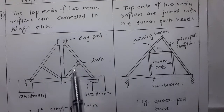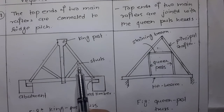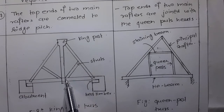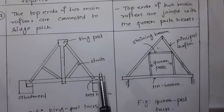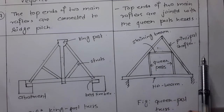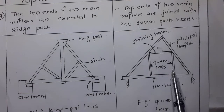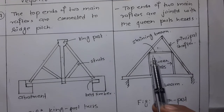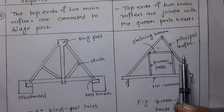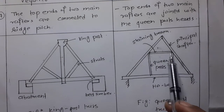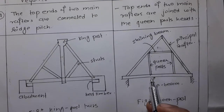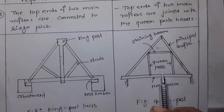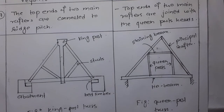These two inclined members which connect the principal rafter and the king post are known as struts. This vertical post is known as a queen post, and the horizontal member which joins the heads of the queen posts is known as a straining beam. This horizontal member is known as a tie beam.